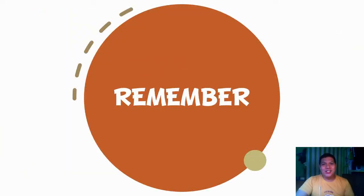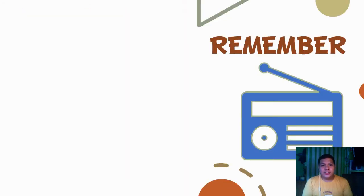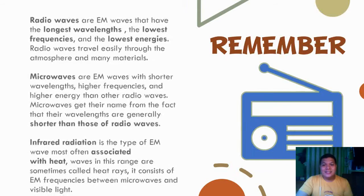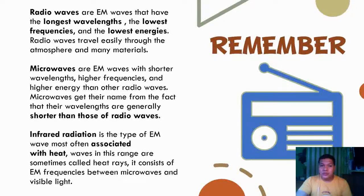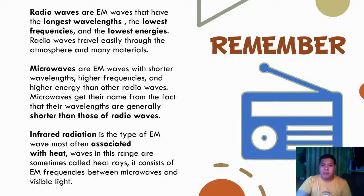Here are the things to remember. Radio waves are electromagnetic waves with the longest wavelengths, lowest frequencies, and lowest energies, and travel easily through the atmosphere and many materials — giving them the widest range. Microwaves are EM waves with shorter wavelengths, higher frequencies, and higher energy than radio waves, getting their name from the fact that their wavelengths are generally shorter than those of radio waves. Infrared radiation is the type of electromagnetic wave often associated with heat — sometimes called heat rays — and consists of EM frequencies between microwaves and visible light.